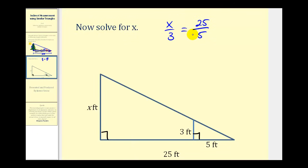So to solve for x we'll cross multiply. Five times x or five x must equal three times twenty-five which is seventy-five. Divide both sides by five. And seventy-five divided by five is equal to fifteen.